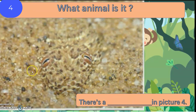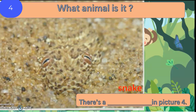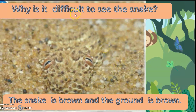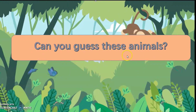What animal is it? Can you see it? These are the eyes. I think you can guess. It's a snake. There's a snake in picture four. It is camouflaged. Why is it difficult to see the snake? The snake is brown and the ground is brown too.